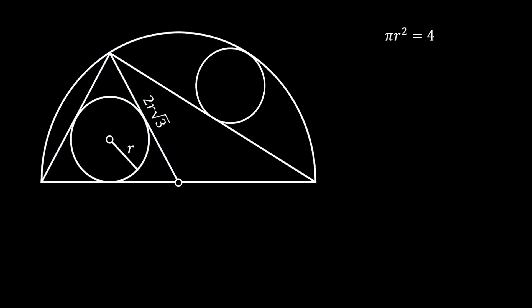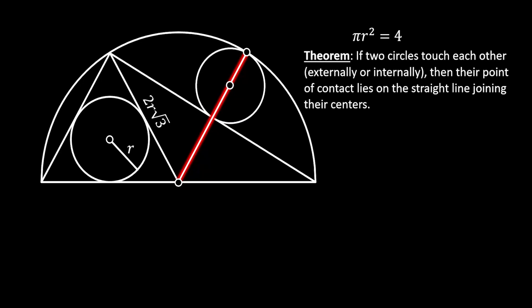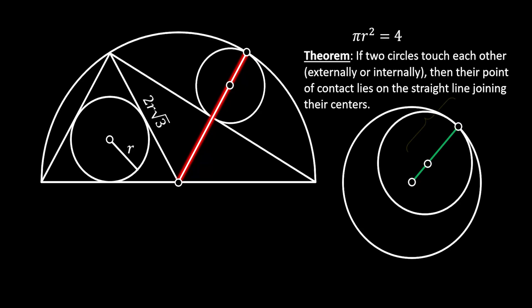Now let's clear our image and shift our focus to the radius of our half circle. If we mark the center of our inscribed circle on the right and rotate this radius to the center of this circle, we have a line which goes through both centers and touches the intersection point between our small circle and our half circle. We know this by using the first circular theorem: if two circles touch each other internally, their point of contact lies on a straight line joining their centers.